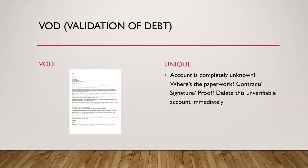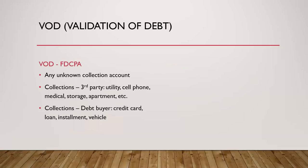The next one is the VOD — validation of debt. On the left is the VOD template, which can be found online at expertcreditsweeps.com/VOD — the free letters are right there. The VOD goes to the collection agency, and your bureau dispute on the right simply states: 'Account is completely unknown — where's the paperwork, the contract, the signature, the proof? Delete this unverifiable account immediately.' The VOD uses the FDCPA, not the FCRA. It's for unknown collections: third-party collections, utility, cell phone, medical, storage, apartment, etc. Debt buyer collections cover credit cards, loans, installments, vehicles.